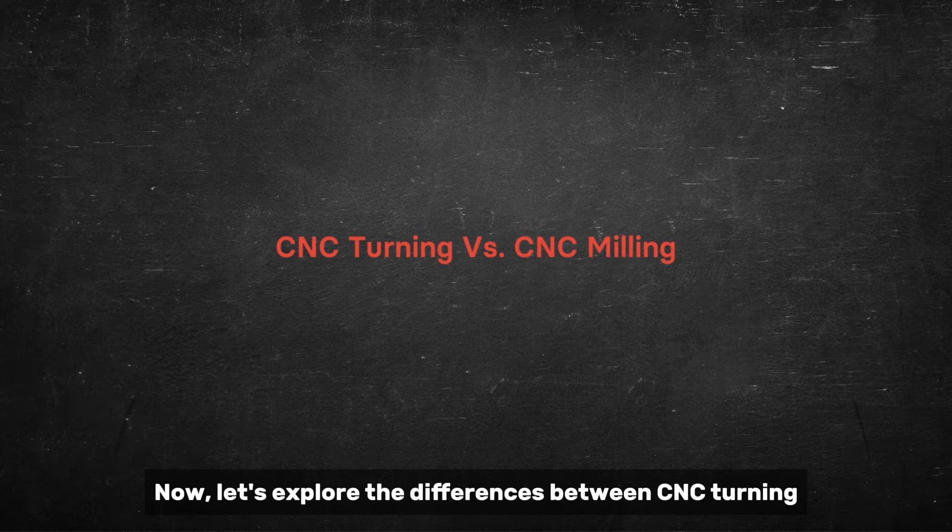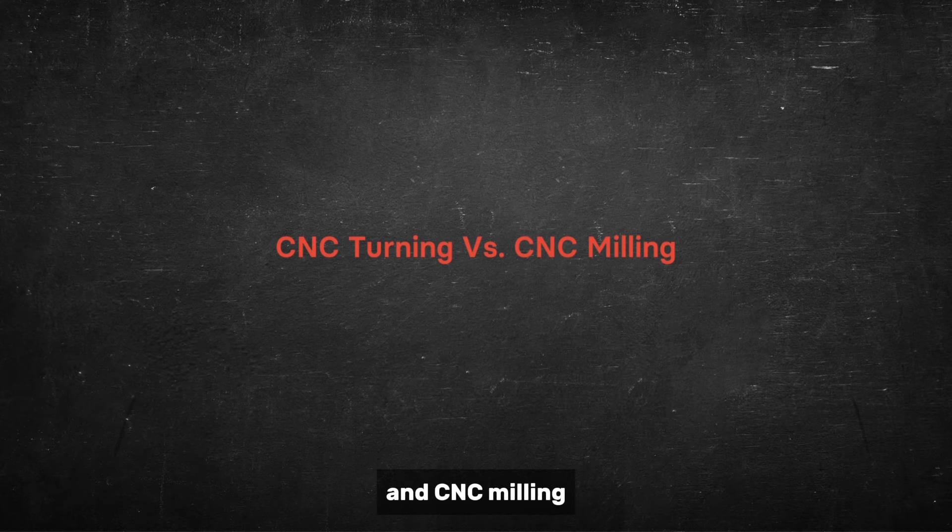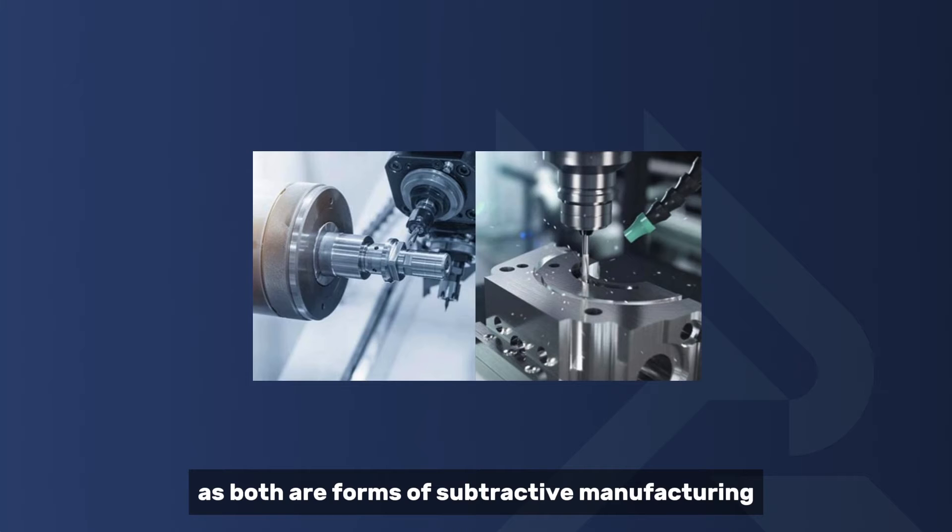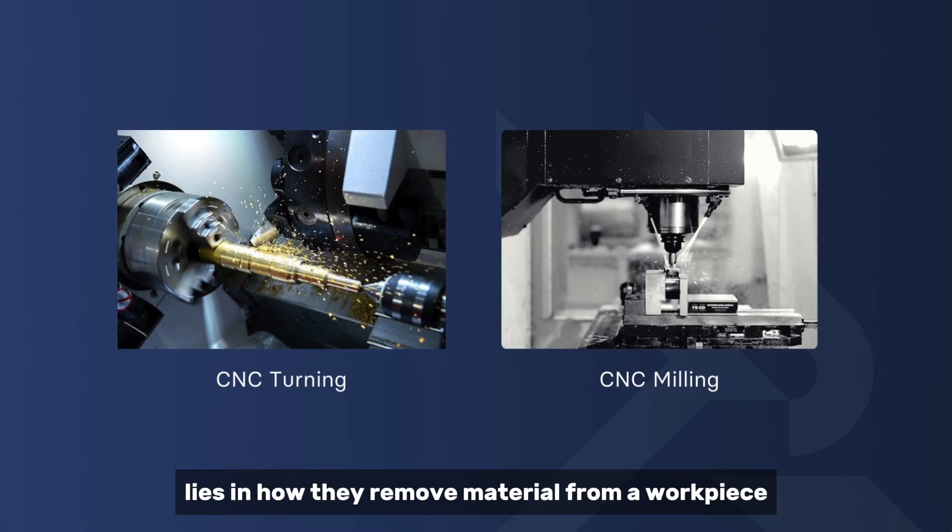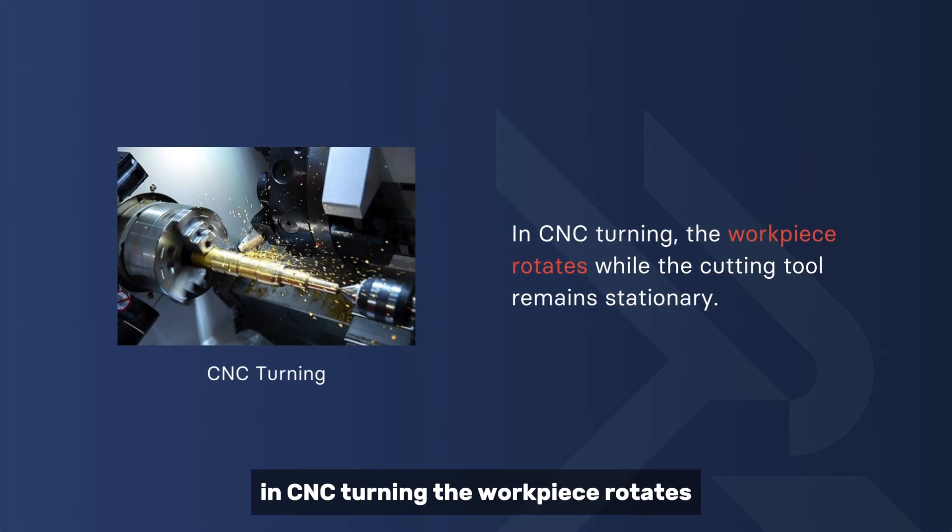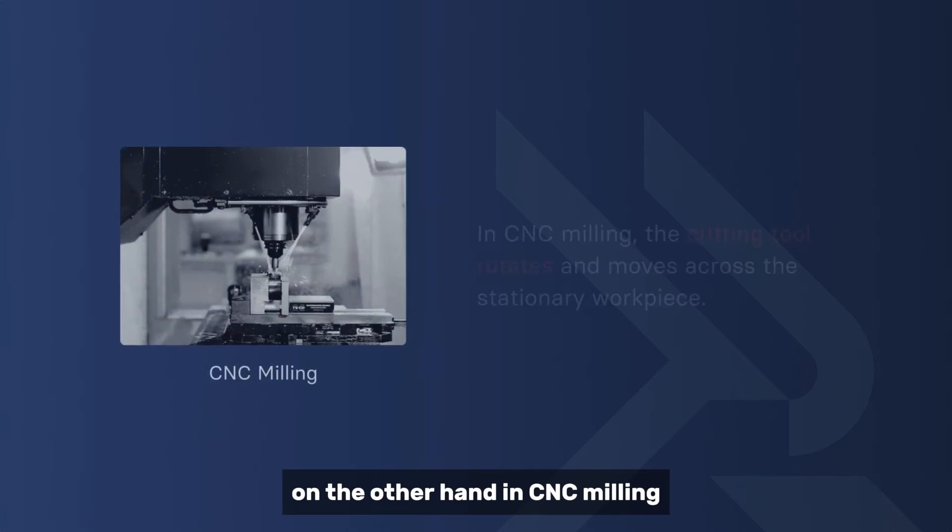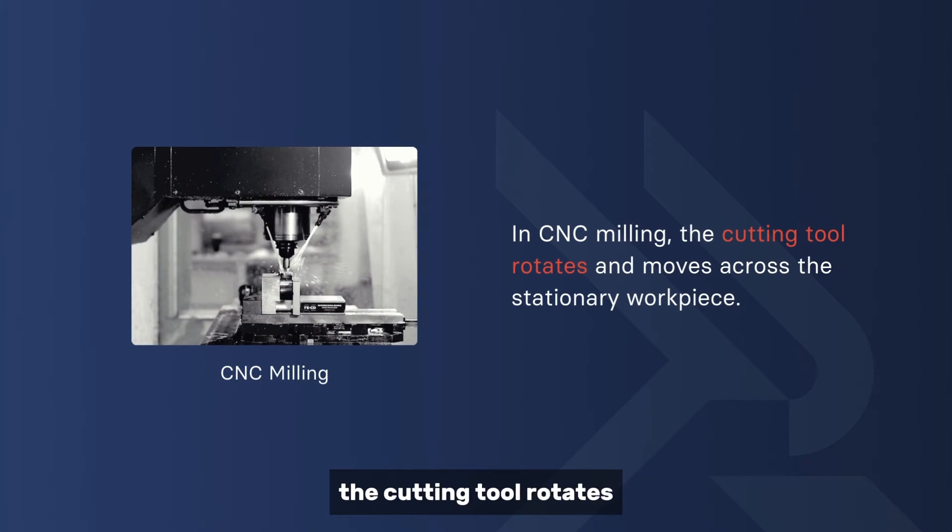Now let's explore the differences between CNC turning and CNC milling. As both are forms of subtractive manufacturing, the main difference lies in how they remove material. In CNC turning, the workpiece rotates while the cutting tool remains stationary. On the other hand, in CNC milling, the cutting tool rotates and moves across the stationary workpiece.